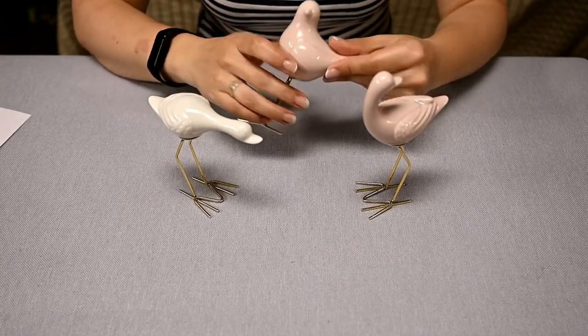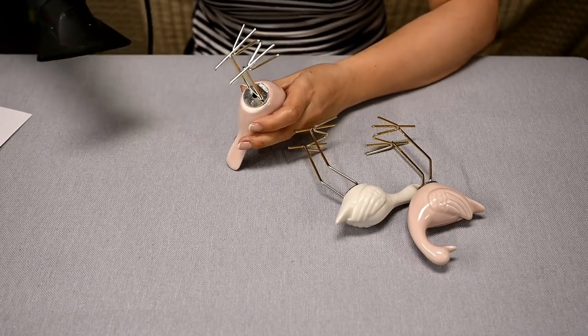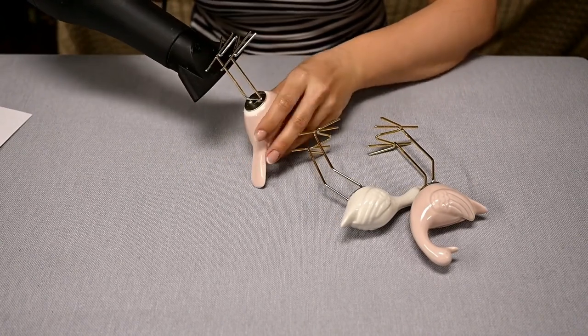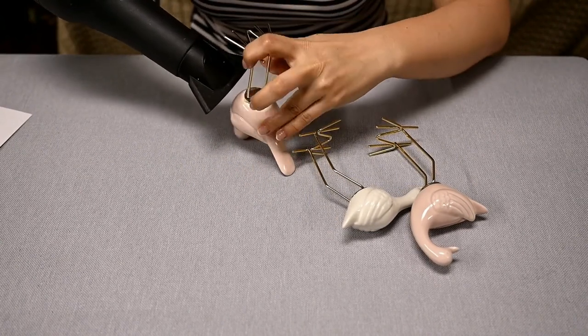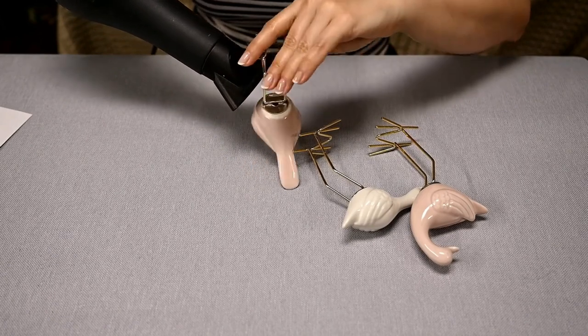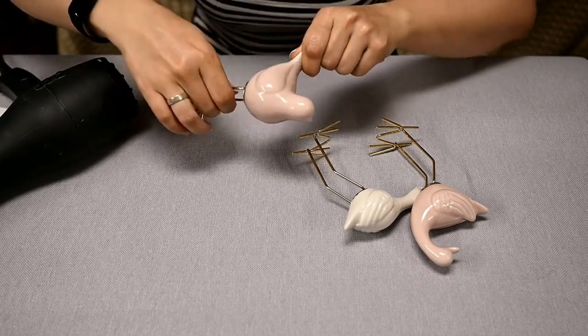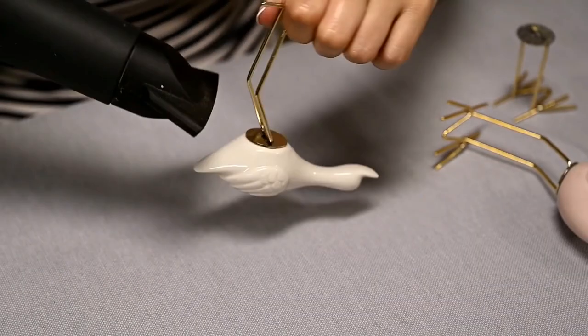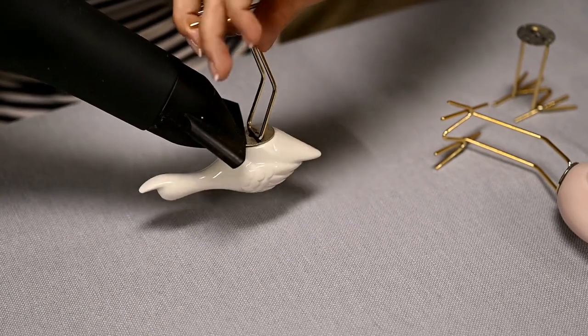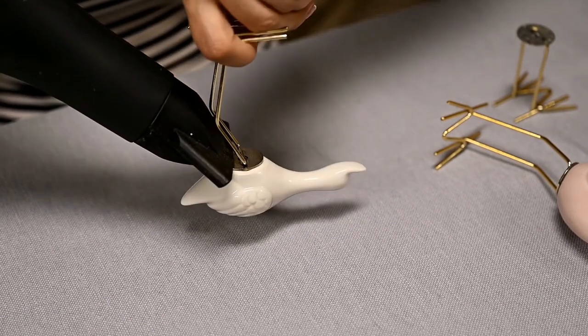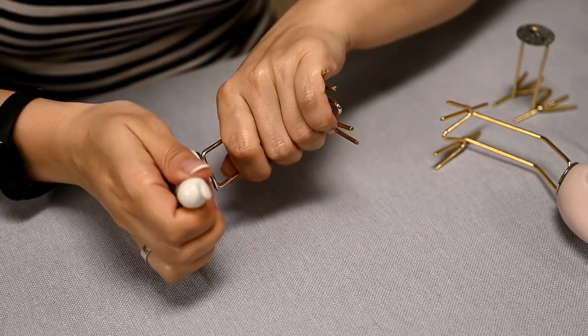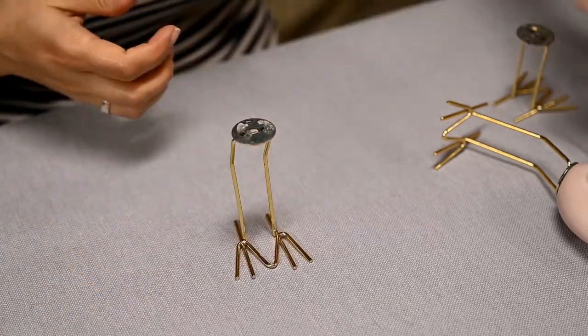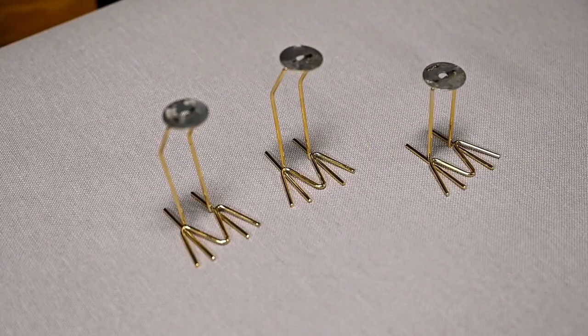For the next makeover I'll be using these birds with legs. I really like the legs and the birds separately but in my opinion they don't fit together so I'll disassemble them first. To do this I'm hitting the place where the legs are attached with a hair dryer. They are hot glued and after a couple of minutes the glue melts and the legs can be removed easily. Instead of geese I want to make cranes.